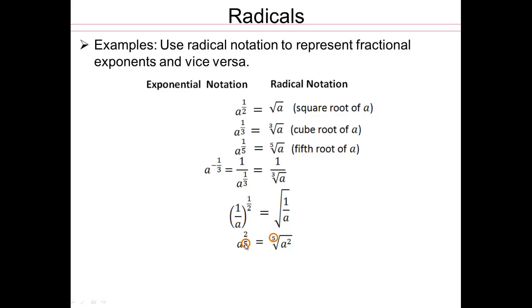Denominator. So when you have a fractional exponent, the denominator is the index. And a squared is what goes inside as a radicand. a squared is a radicand, and 5 is the index.